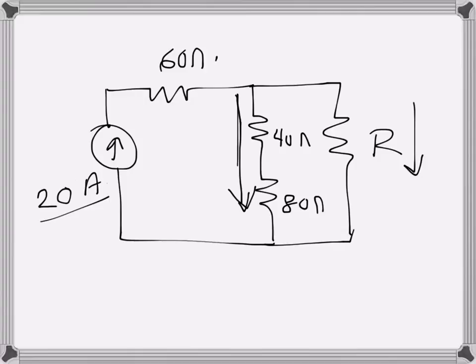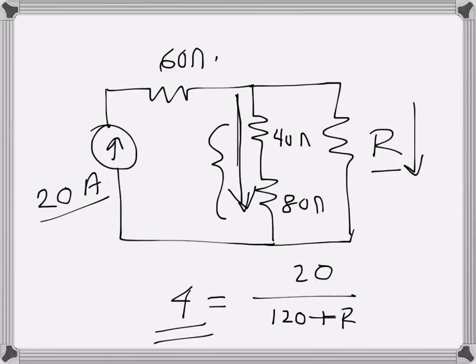So 4 over here is equal to total current divided by sum of the resistances of the parallel paths. So the resistance of this path is 80 plus 40, that is 120, plus R. And since 4 amps is the current through this one, we will have to multiply by the other resistance which is R.